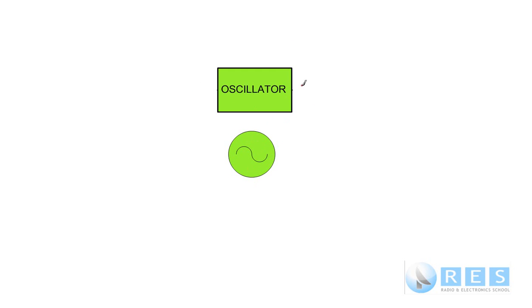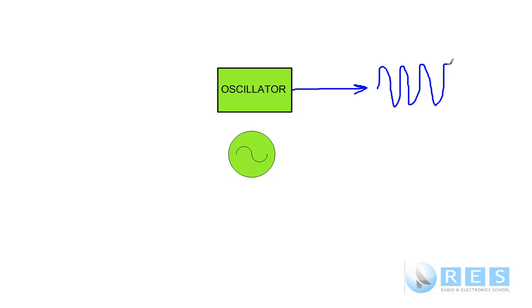An oscillator produces a radio frequency sine wave, but it could also produce an audio frequency sine wave. In fact, an oscillator can produce sine waves at any frequency. So if we wanted sine waves at 1 MHz, we could achieve that easily with an oscillator.